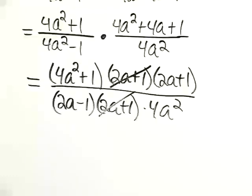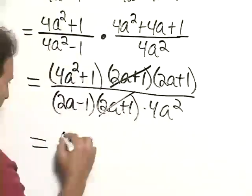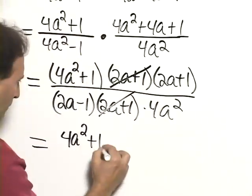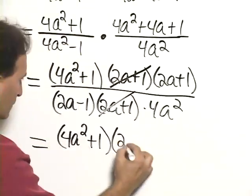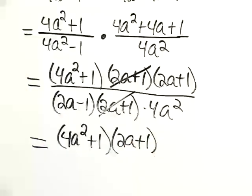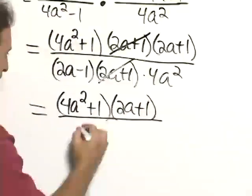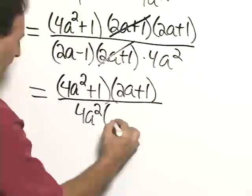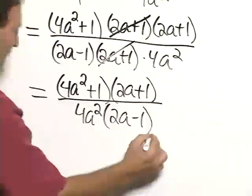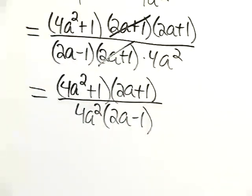And therefore, our final answer is 4a squared plus 1 times 2a plus 1 over 4a squared times in parentheses 2a minus 1.